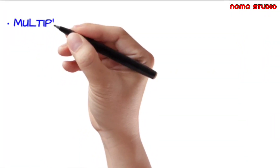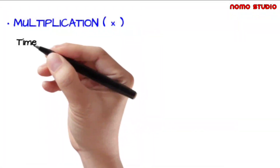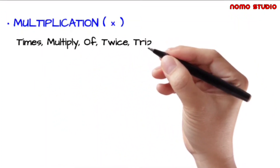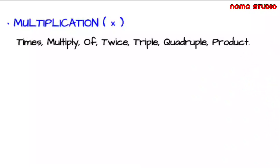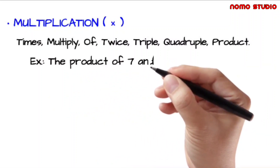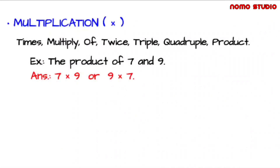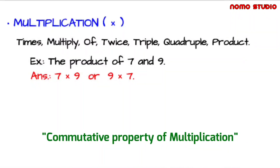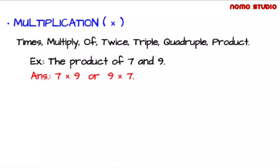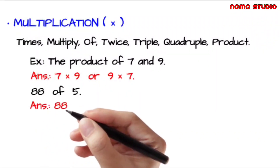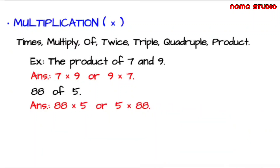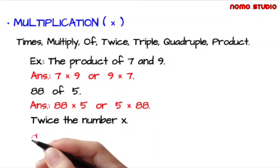Next we have multiplication. Common English terms used are: times, multiply, of, twice, triple, quadruple, and product. For instance, the product of seven and nine is just seven times nine, or nine times seven — in multiplication, the order can be interchanged due to the commutative property of multiplication, meaning changing the order of factors does not change the product. Also, 88 of 5 is just 88 times 5. And twice the number x simply means 2x.